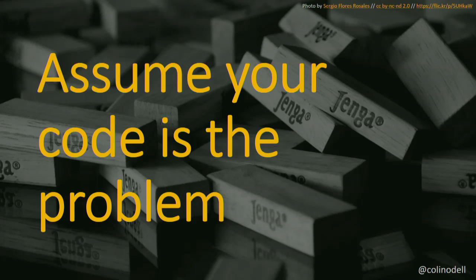When I debug, I always assume my code is the problem first. Think about it: what are the chances the issue is in code one person wrote versus a module that tens of thousands wrote, or Drupal core used by hundreds of thousands daily? The chances are extremely high the bug is in your code. 95% of the time it is. So before debugging Drupal core or a module, validate that your code is correct first. That saves a lot of wasted time.